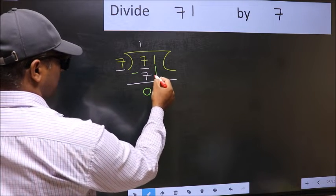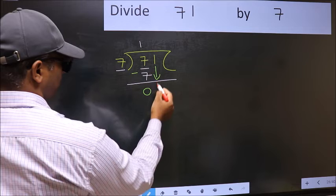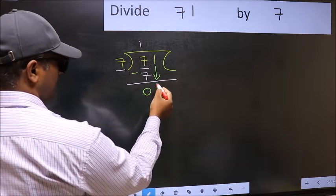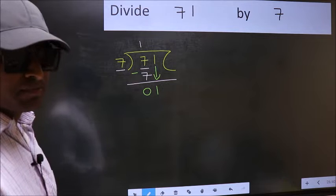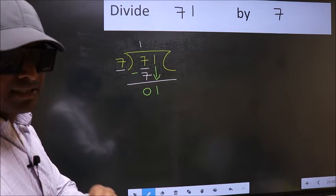After this, bring down the beside number. So 1 down. After this step, the mistake happens. And the mistake is this.